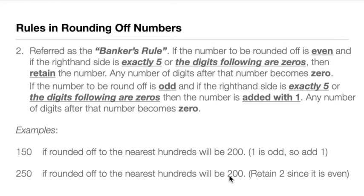To wrap up the rules: Rule 1 — if the digit to the right is less than 5, we retain, which is rounding down. Rule 2 — if the digit is greater than 5, we add 1, which is rounding up. Rule 3 — if it is exactly 5, we apply the banker's rule: if the number is even, we retain; if it is odd, we add 1.